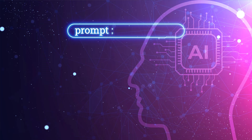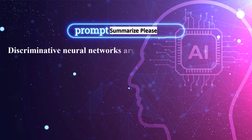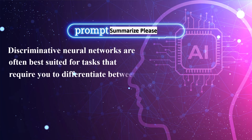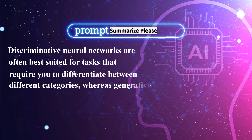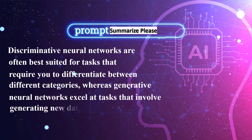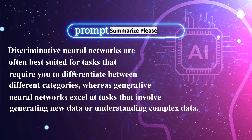So this large language model generative pre-trained transformer, please summarize this video for me: Discriminative neural networks are often best suited for tasks that require you to differentiate between different categories, whereas generative neural networks excel at tasks that involve generating new data or understanding complex data. Both types of networks offer valuable approaches for tackling a wide array of problems in machine learning and artificial intelligence.